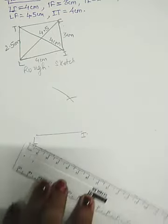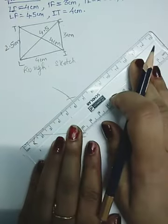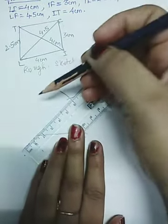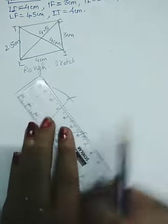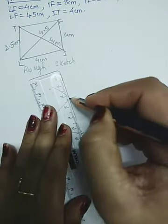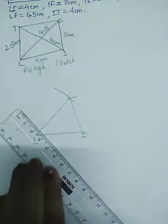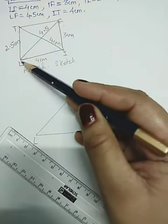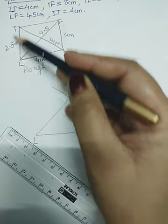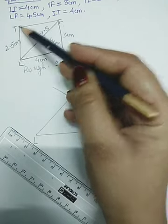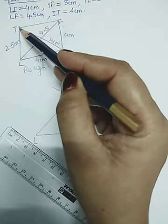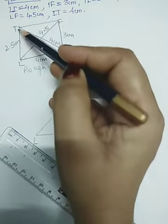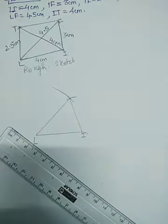Join this line. Now again, taking L as a center, take an arc length of 2.5. And same way, taking I as a center, cut an arc length of 4 cm. These two will cut somewhere here. Let's do it.